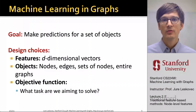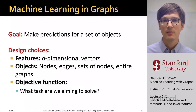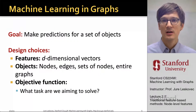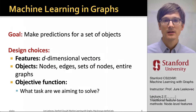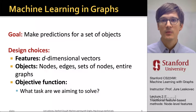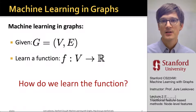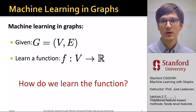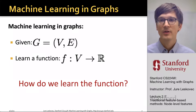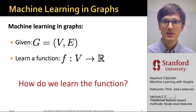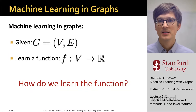The goal will be how we make predictions for a set of objects of interest, where the design choice will be that our feature vector will be a d-dimensional vector. Objects of interest will be nodes, edges, or sets of nodes meaning entire graphs. The objective function will be thinking about what are the labels we are trying to predict. Given a graph as a set of vertices and edges, we want to learn a function that for every node gives us a real-valued prediction — for example, useful if we are trying to predict the age of every node in our social network.